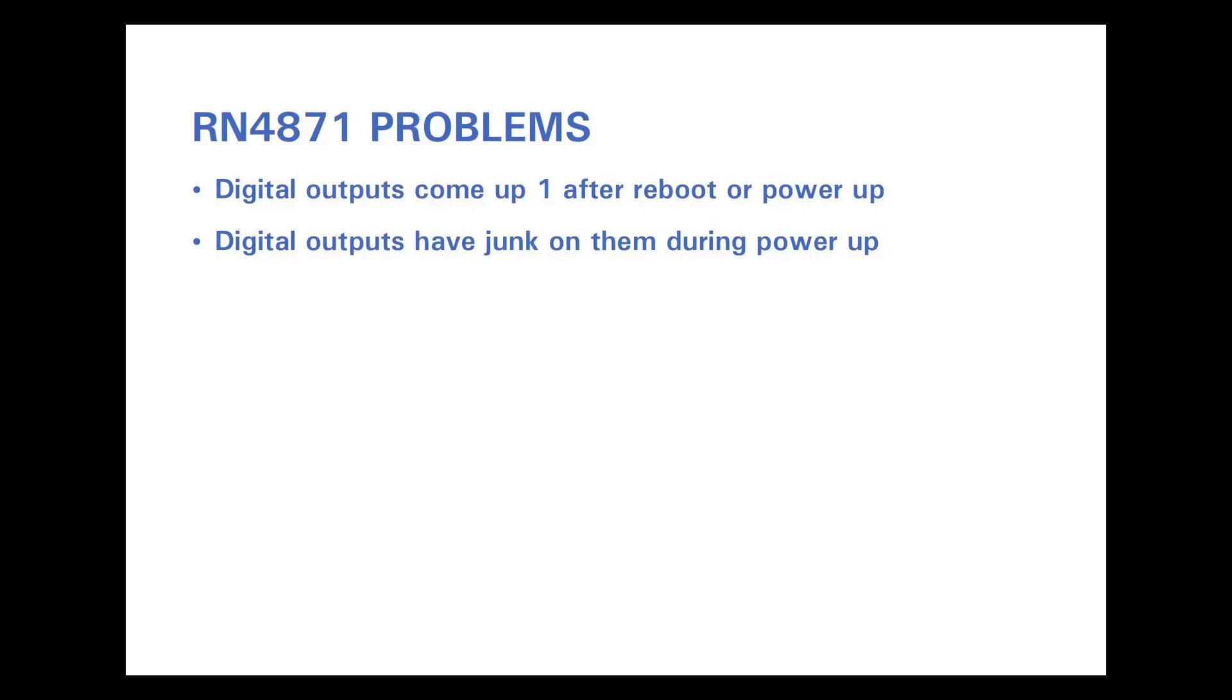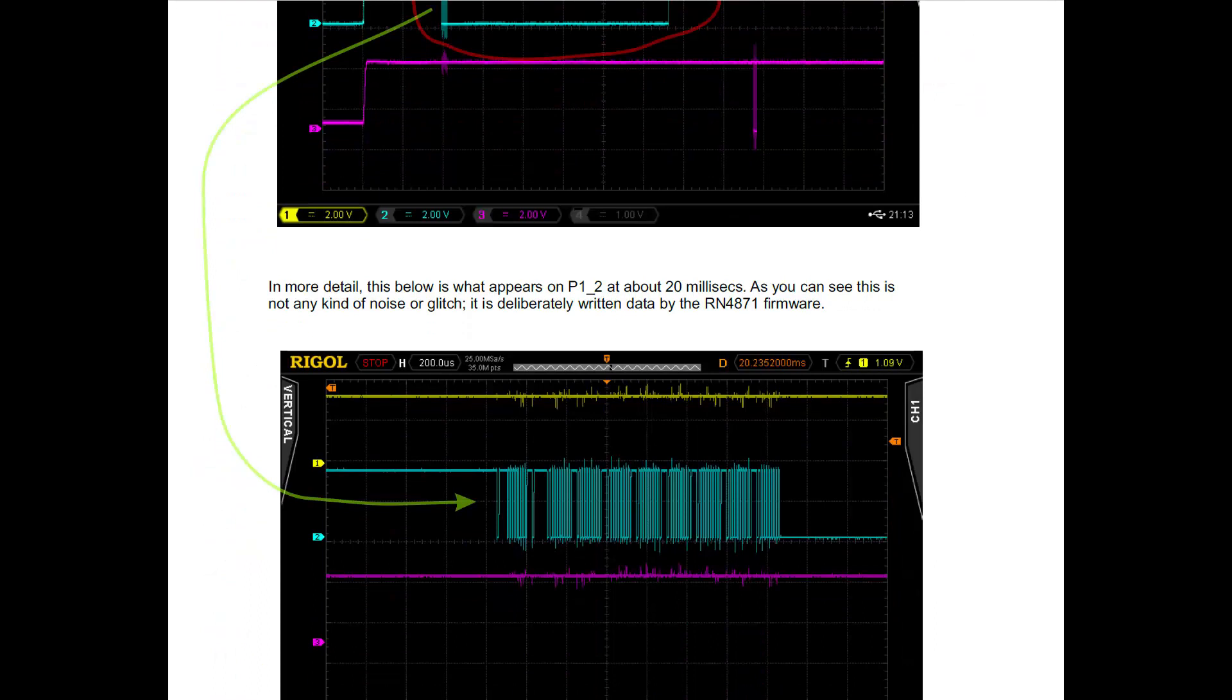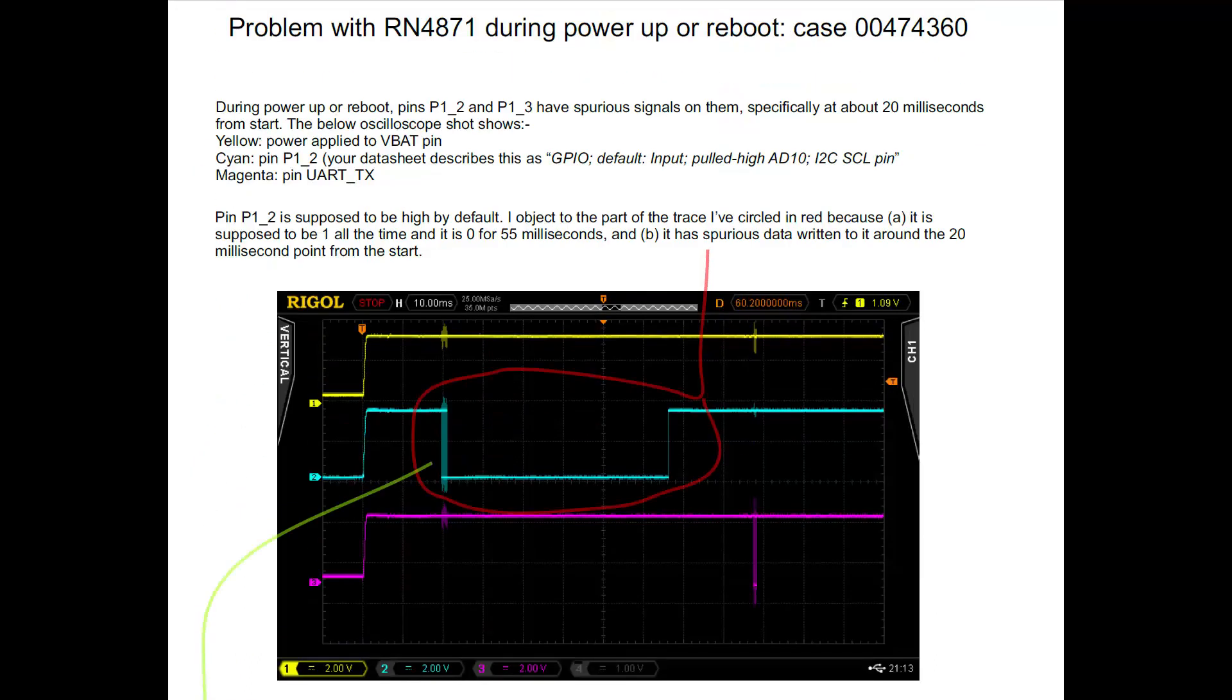The second problem I discovered is that when the RN4871 is powered up, some of its digital outputs have junk on them, contrary to the specification. They're supposed to come up in a state of 1 from the beginning, but that is not the case, as I shall now show. The cyan trace here shows one of the digital outputs that I wanted to use after power is applied to the RN4871 at this point here. And you can see that instead of coming up cleanly in a 1 state, it spends about 50 milliseconds in a 0 state. It also has a load of junk at the front here, which if we expand it, looks like that. Now, I raised this with Microchip, and they confirmed that this was indeed the case, they could observe it themselves, that it is not intended, but eventually, after a few weeks, they said, well, it needs a firmware change, and we can't promise that that's going to happen any time soon. So I concluded that I had to work around that some way.